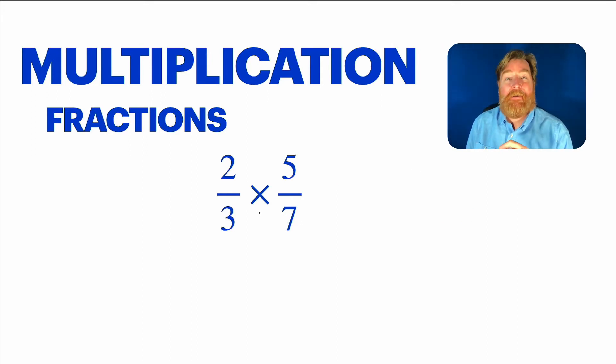Yes, of course. You can multiply anything by anything. And the coolest part is you just multiply straight across. That's how multiplication works. So two times five is ten, and three times seven is twenty-one. Game over. See how nice that is?